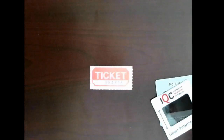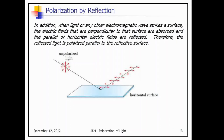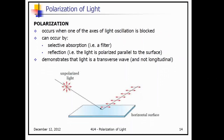That's how polarized light works. When light or any other electromagnetic wave strikes a surface, the electric fields that are perpendicular to that surface are absorbed, and the parallel or horizontal electric fields are reflected. Therefore, the reflected light is polarized parallel to the reflective surface. Polarization occurs when one of the axes of light oscillation is blocked — this occurs by selective absorption or reflection — and it demonstrates that light is a transverse wave, not longitudinal.